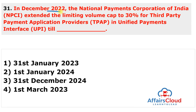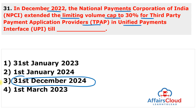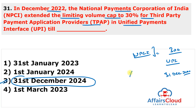Question 31: NPCI extended the limiting volume cap of 30% for third-party payment application providers in UPI until which date? The answer is 31st December 2024. NPCI extended the deadline for the 30% volume cap for third-party UPI apps by two years. At present there is no volume cap, and the cap aims to avoid concentration risk and protect the UPI ecosystem.